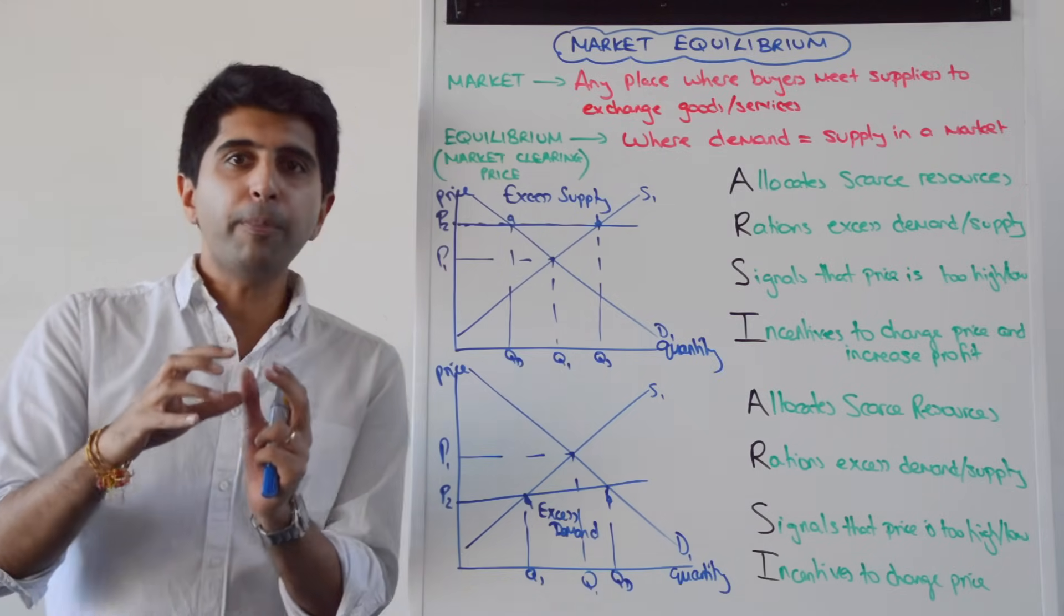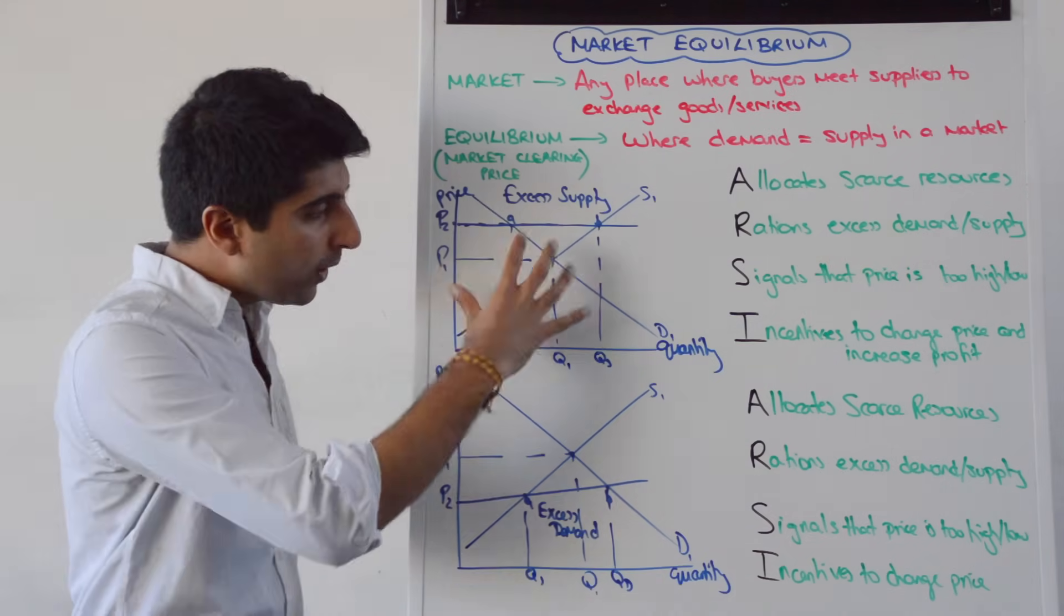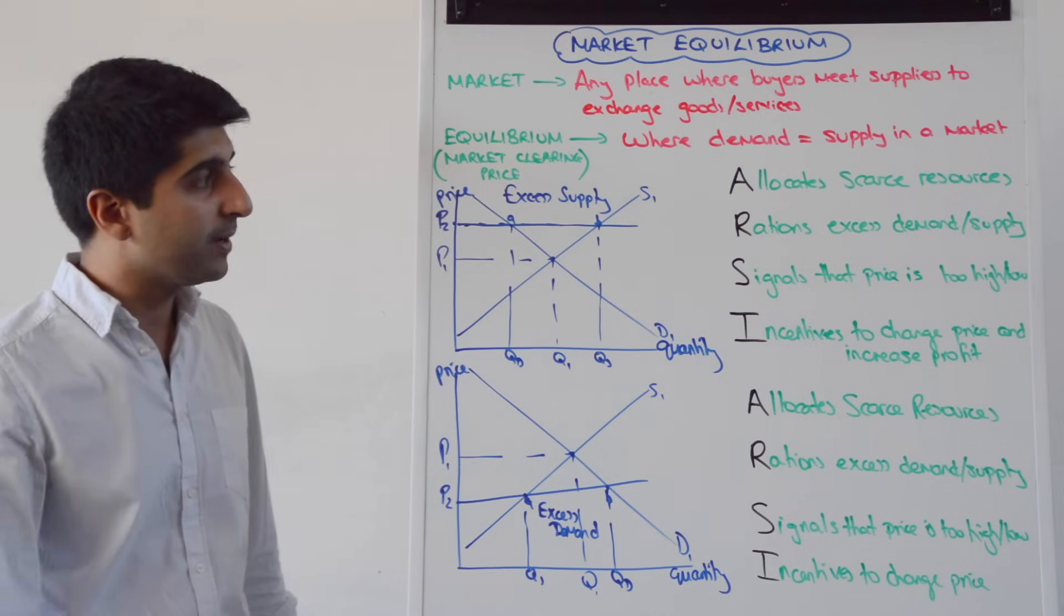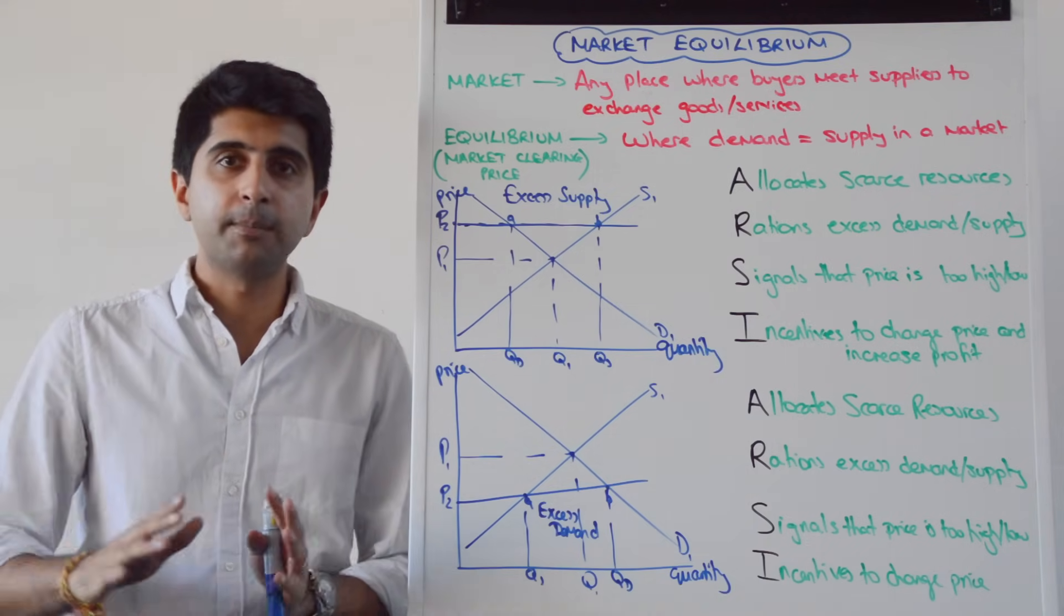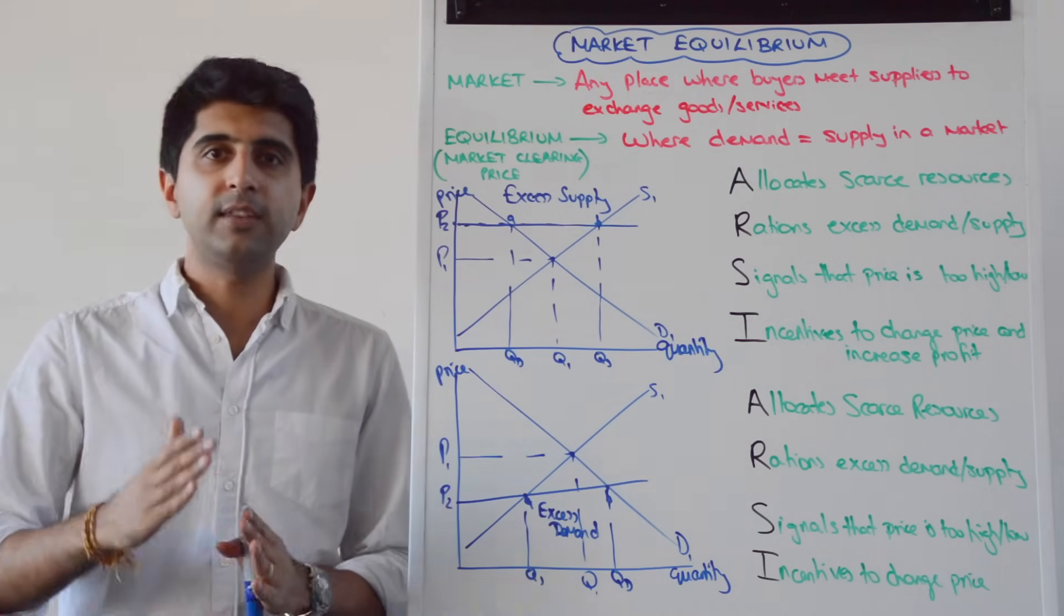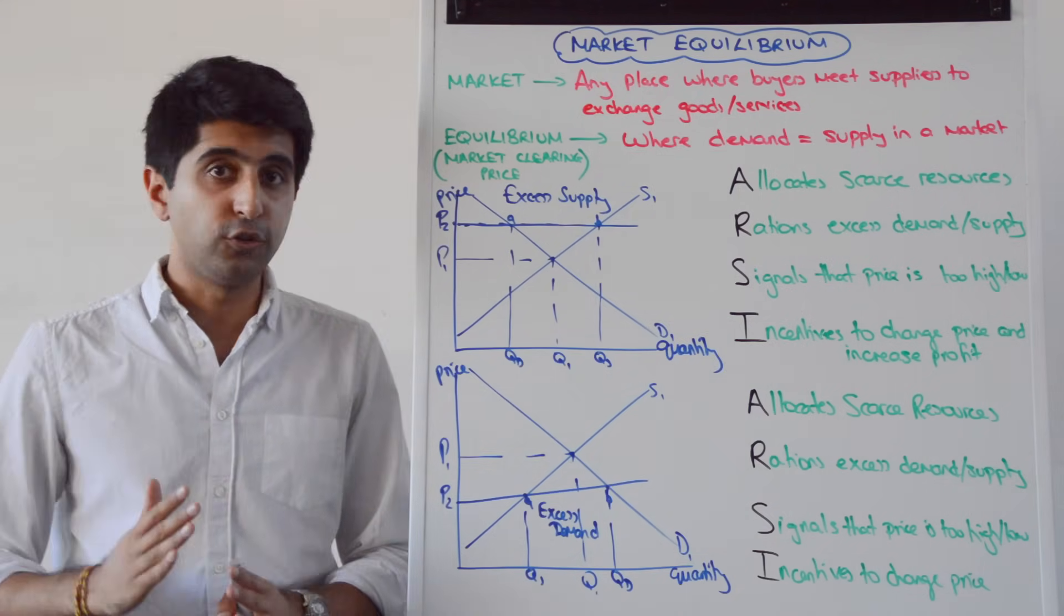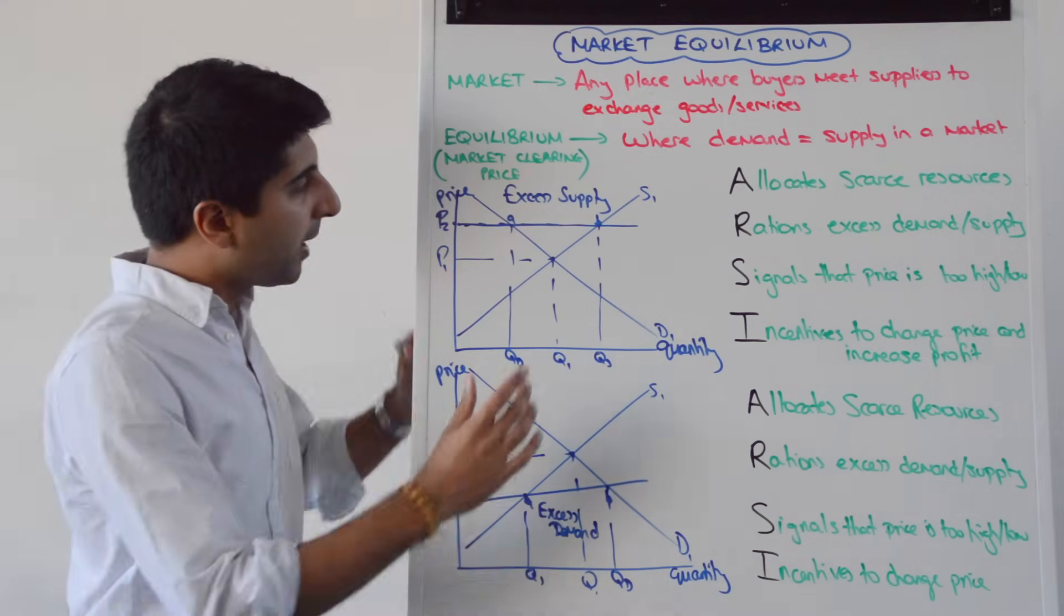Let's understand how the operation of these functions can take away problems of disequilibrium in a free market. A free market is when there is absolutely no intervention by government at all. There is no involvement of government. It's just the interaction of producers and consumers. So in a free market,